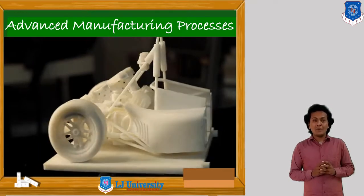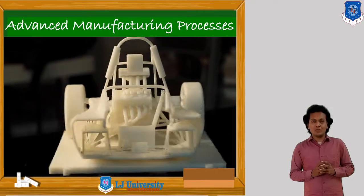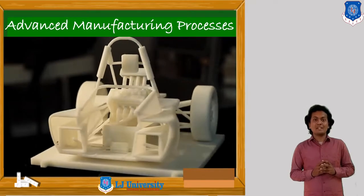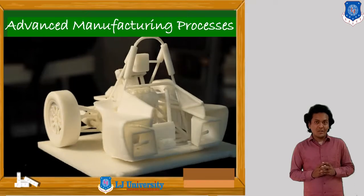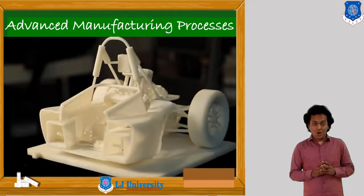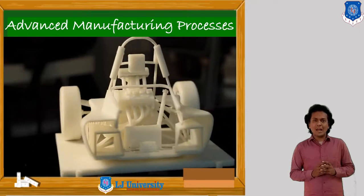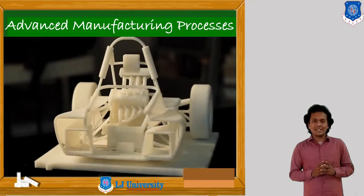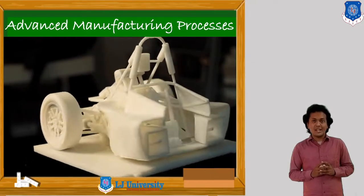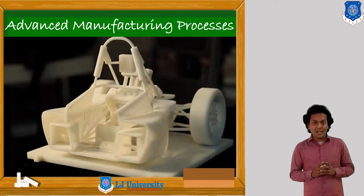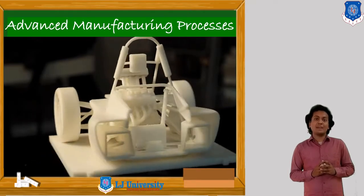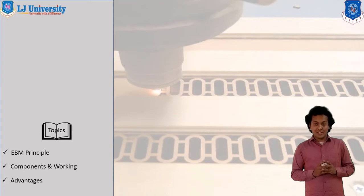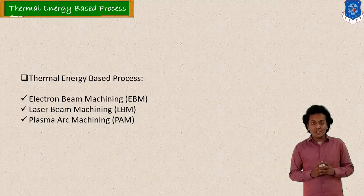Based on mechanical energy, we discussed abrasive jet machining and ultrasonic machining. In the previous session, we discussed the chemical energy-based process, that is electrochemical machining. Today, we are going to discuss processes based on thermal energy. Based on thermal energy involved, we can classify the unconventional machining processes: first is electron beam machining, then laser beam machining, and also plasma arc machining.